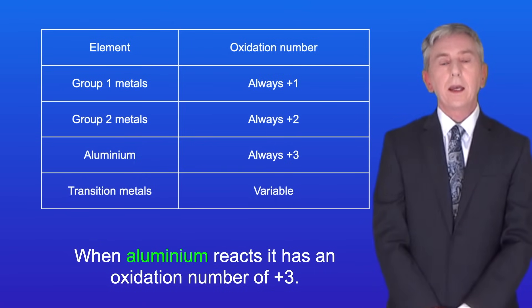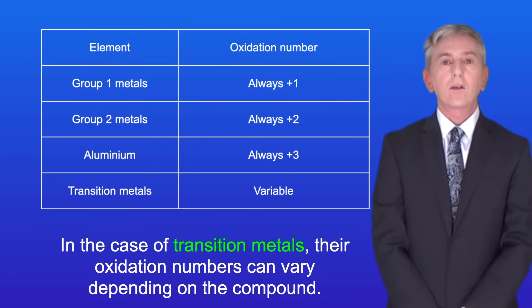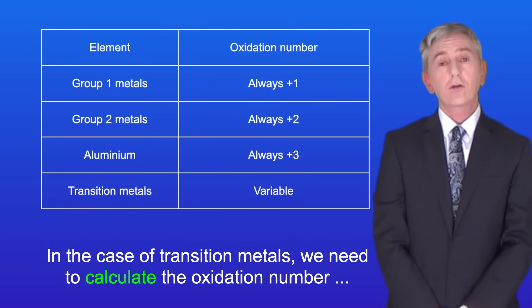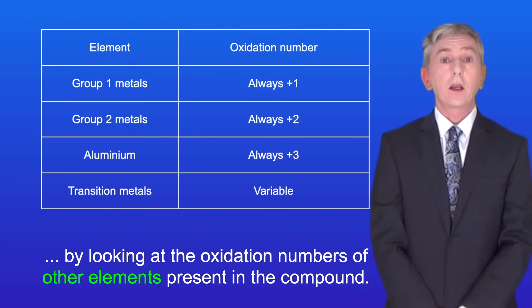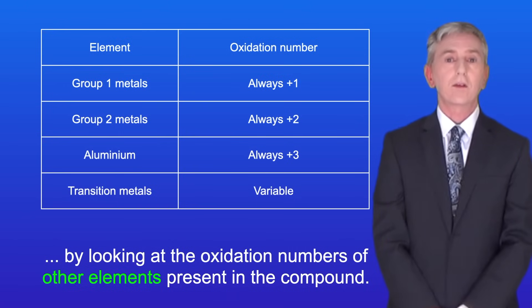When aluminium reacts, it has an oxidation number of plus three. Now in the case of transition metals, their oxidation numbers can vary depending on the compound. So in the case of transition metals, we need to calculate the oxidation number by looking at the oxidation numbers of other elements present in the compound.